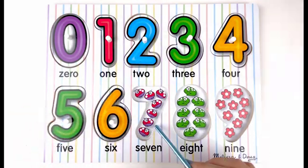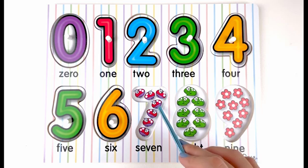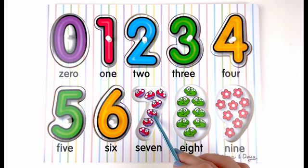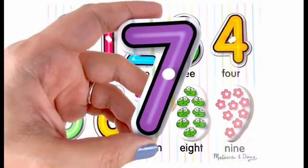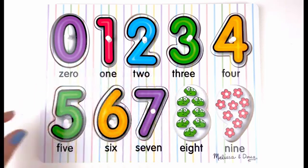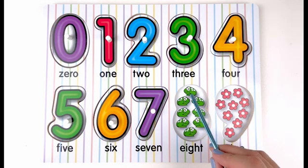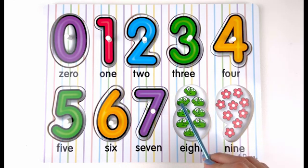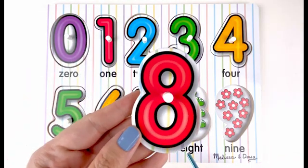Let's find out how many ladybugs we have here: one, two, three, four, five, six, seven. Seven ladybugs. Let's see how many frogs we have here: one, two, three, four, five, six, seven, eight. Eight frogs.